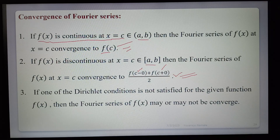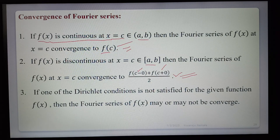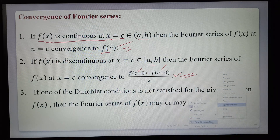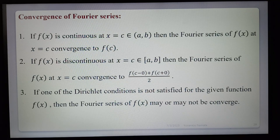If one of the Dirichlet conditions is not satisfied for the given function f(x), then the Fourier series of f(x) may or may not be convergent. If any one of the three conditions is not satisfied, convergence is not guaranteed. These convergence conditions are all useful when solving problems.